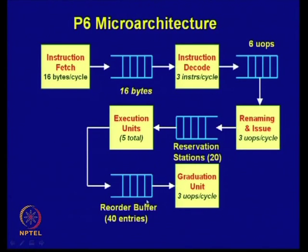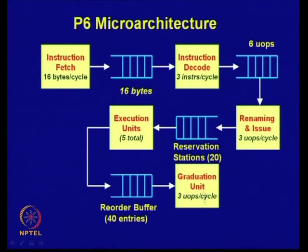The outputs go to the reorder buffer because out-of-order execution can take place and results are produced in different order. The reorder buffer has 40 entries. Then it goes to the graduation unit, where three micro-operations per cycle are retired.